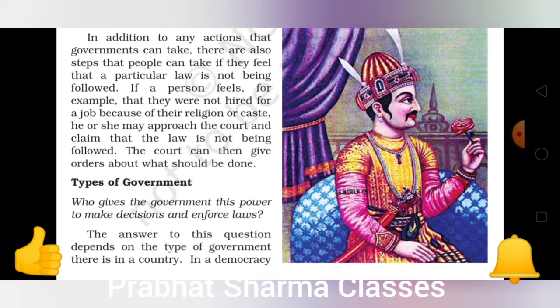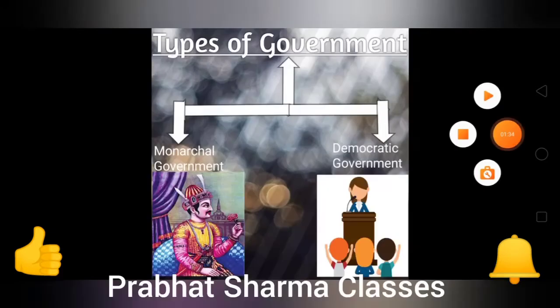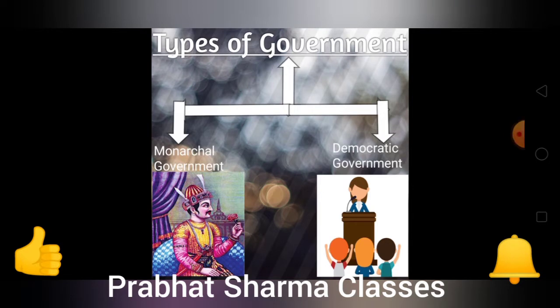इसको start करने से पहले topic को एक start से समझ लेते हैं। अगर हम types of government की बात करें तो government दो types की है। Actually तीन types की government होती है, but हमें यहाँ पर NCRT की basis पर दो types की ही पढ़नी है।